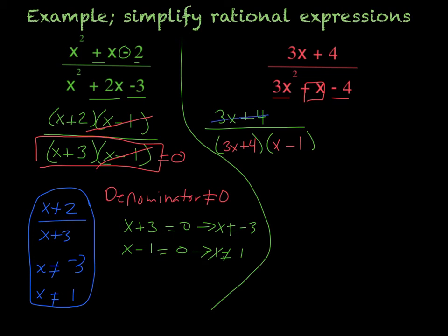And then we cancel things out, and we get our final answer of 1 over x minus 1. Now remember to put that 1 in there. This is not canceling out to 0, it's canceling out to 1. So don't forget to put the 1 in there.